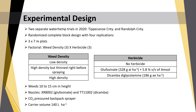During 2020, we conducted two separate waterhemp trials in two different counties of Indiana: Tippecanoe and Randolph. Trials utilized a two-factor factorial randomized complete block design with four replications and 3×7 meter plots. The two factors were weed density and herbicide. Weed densities were low density, high density thinned right before spraying, and high density. Herbicides sprayed included glufosinate and dicamba at the rates shown in the table. Weeds were between 10 and 15 centimeters in height when herbicides were sprayed, and all applications were made using standard small plot research techniques.